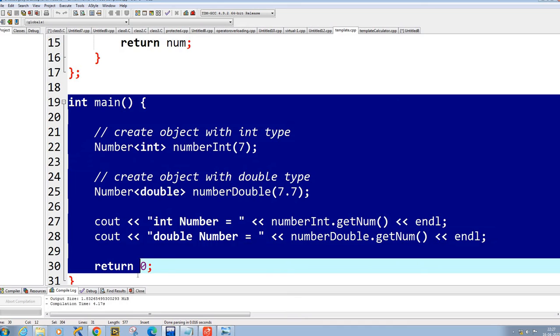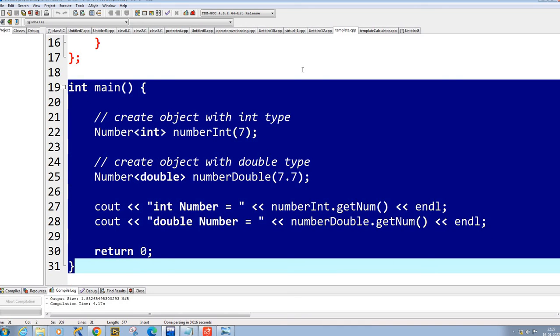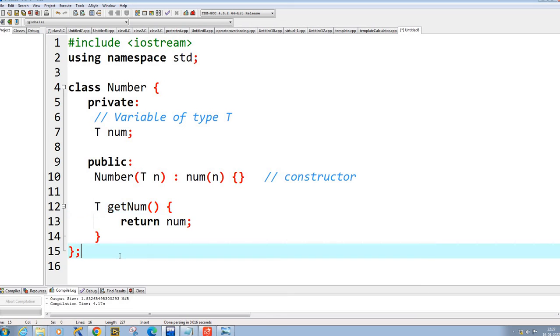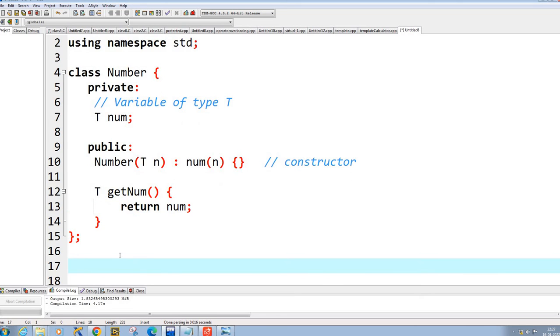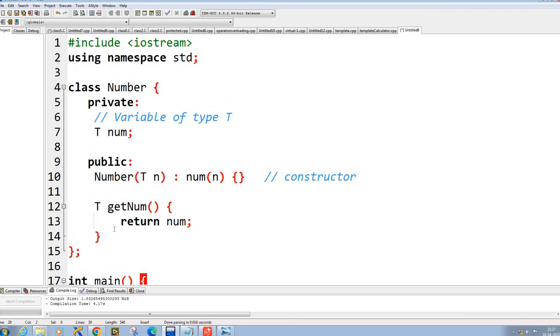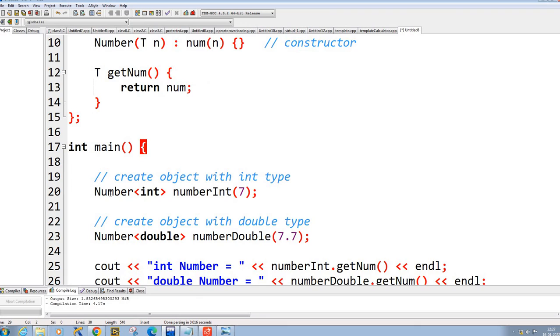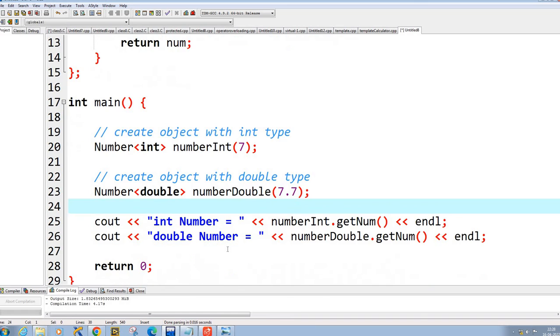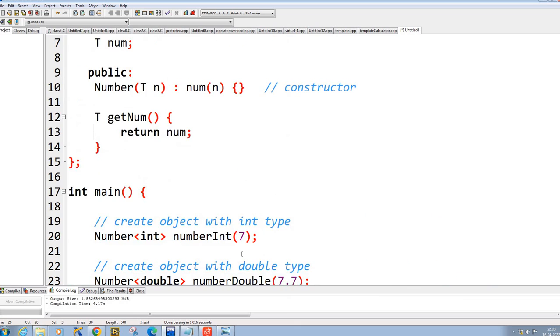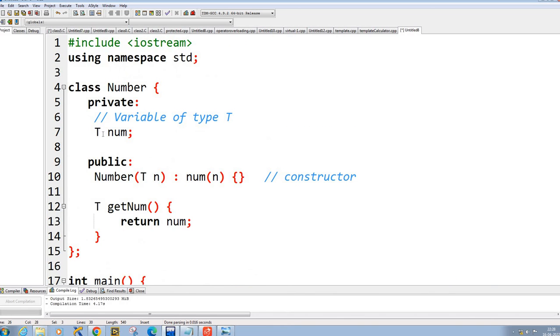And there is the main, in the main function, you can simply call it like this: number integer number 7, number double, number double. These are the objects. After that, integer number and double number also, it will work commonly. The same class will work for both, the T will be replaced by integer or double.